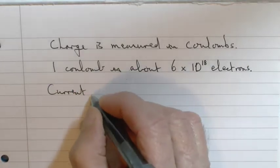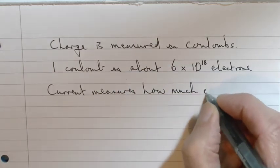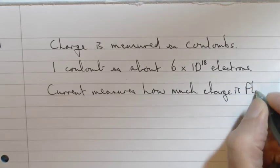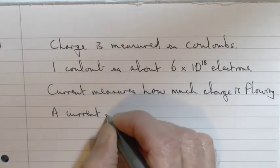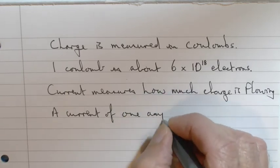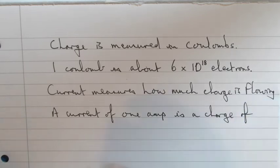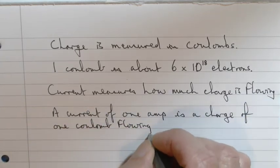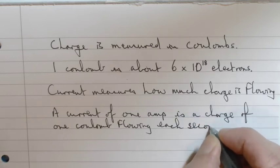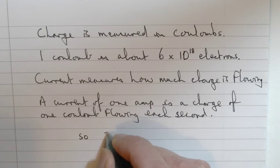So how many electrons have to flow for a current of one amp? As I said before, electrons are very small, and therefore we measure current flow in terms of coulombs. That's a very large number of electrons, 6 times 10 to the 18. A current of one amp is flowing if a charge of one coulomb flows every second. So 2 coulombs a second would be 2 amps, and 3 coulombs a second 3 amps.